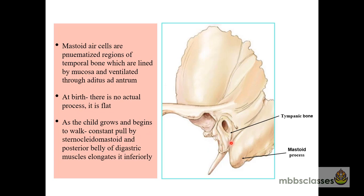Remember that at birth, there is no actual mastoid process. This bulbous structure is seen in adults; at birth, it is flat. There is one foramen located here — the stylomastoid foramen — from which the facial nerve arises. At birth, this mastoid process is flat and the stylomastoid foramen lies just behind the tympanic segment of the temporal bone.